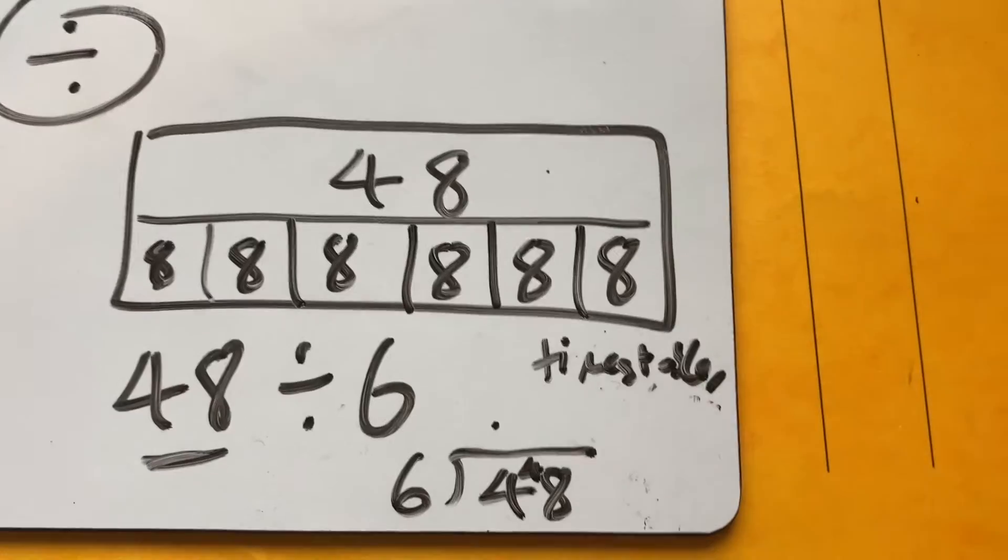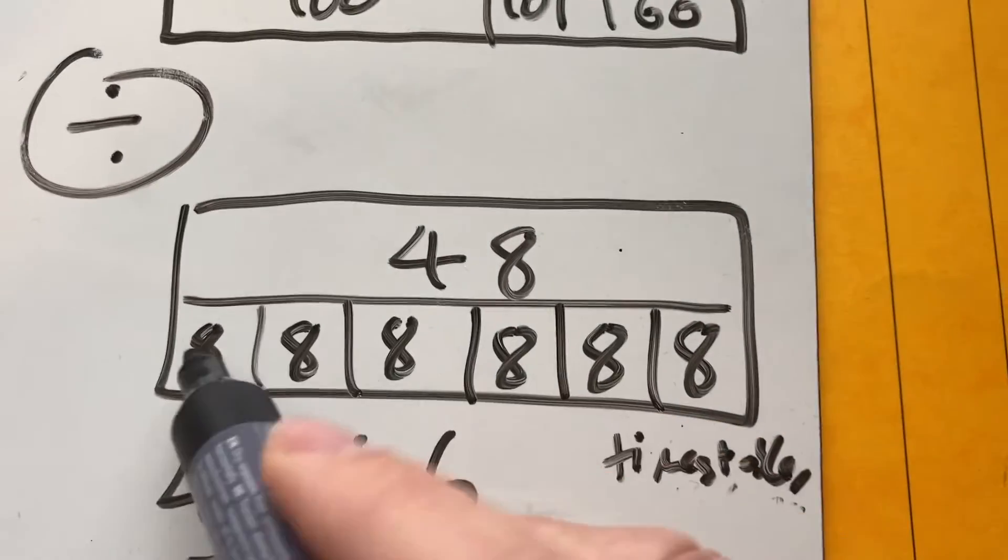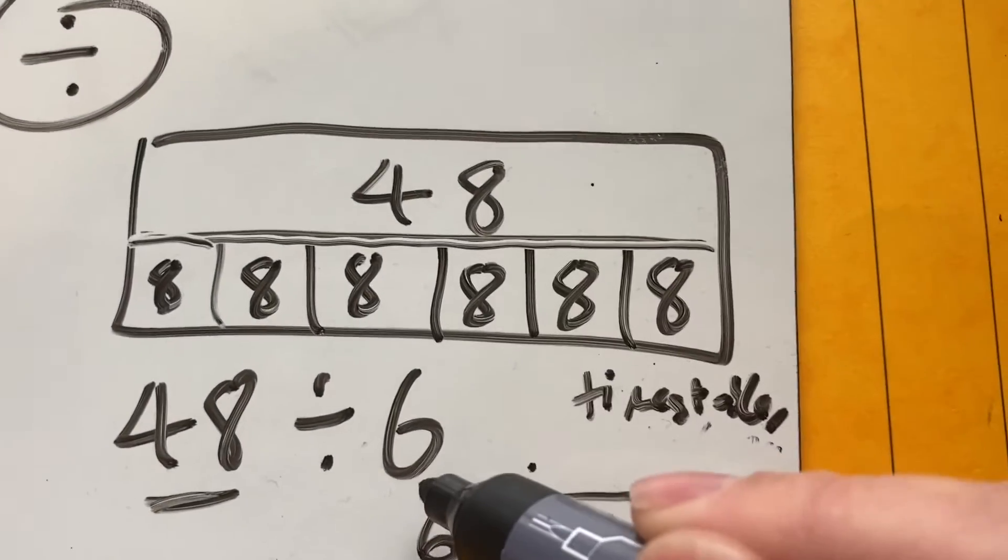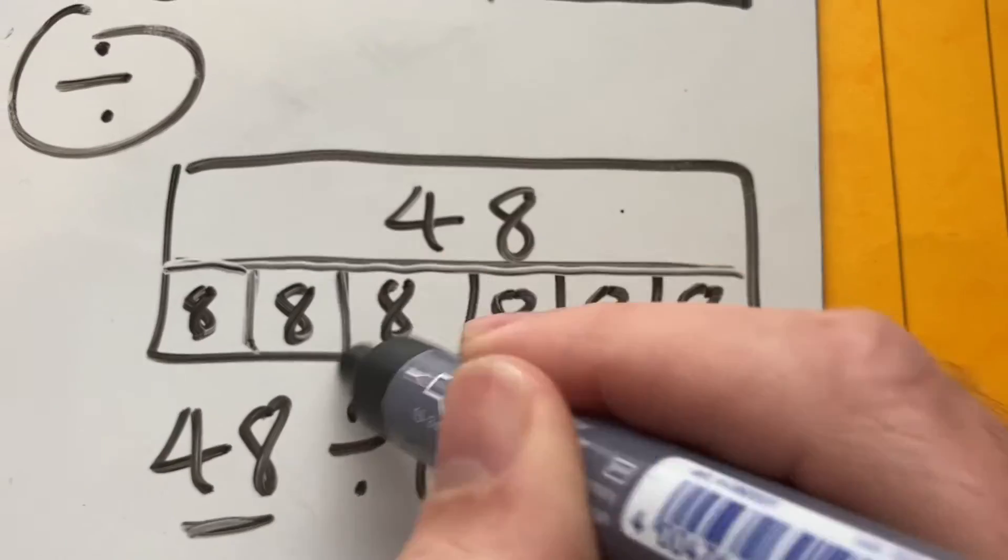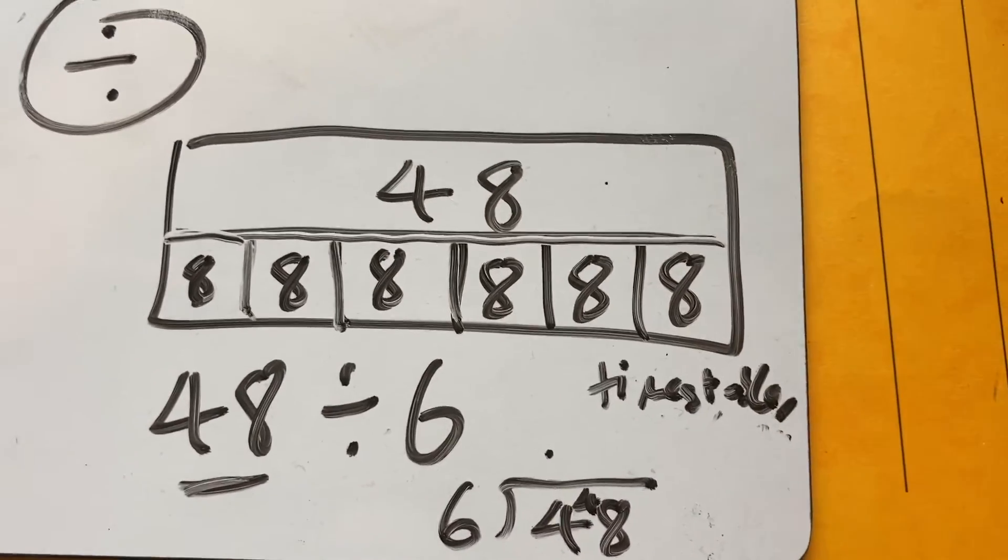Or conversely, dividing 48 by 8, I'm going to get 6. So you can see here that the bar model is a nice representation of dividing 48 into 6 parts. And each part is worth 8. 1, 2, 3, 4, 5, 6.